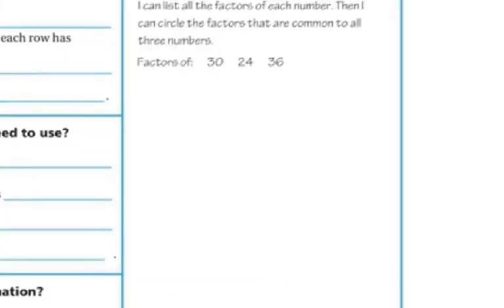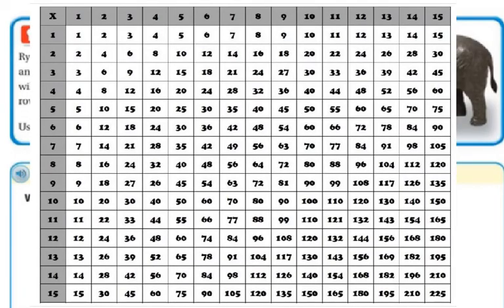You can use a multiplication chart — it can totally help you. For example, if I'm looking for 30, I can go through and find all the 30s. Let's circle them instead. There's 30, multiplied by 6 and 5. Do you see how a multiplication chart can help you? You are welcome to use that.